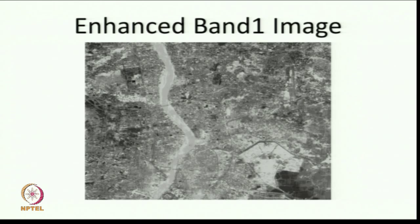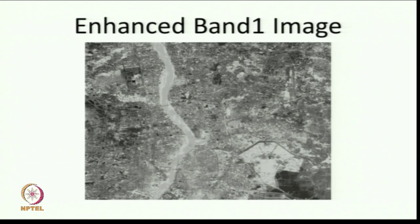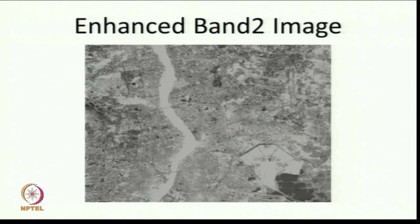This is the band 1 image corresponding to the blue band. This is the enhanced image for band 2, that is green. Please note that the river water and pond water are different — this is the river water and this black is pond water. River water and pond water give different grey values. In band 2 as well, the river water and pond water are actually different, giving different grey values.